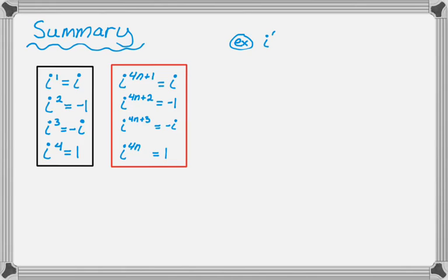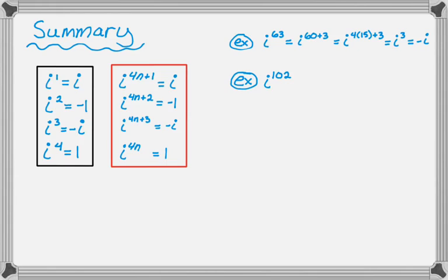Let's look at a couple of quick examples. i to the 63: I'm always looking for i to the fourth to show up. i to the 60 plus 3 — i to the 60 is i to the 4 times 15, plus 3 — so that's just i cubed, which is negative i. The remainder was 3, so I already knew it was negative i. Now i to the 102: the remainder when I divide by 4 is 2, so the answer is negative 1. And i to the seventeenth: the remainder is 1 when I divide by 4, which means I'm just dealing with i.